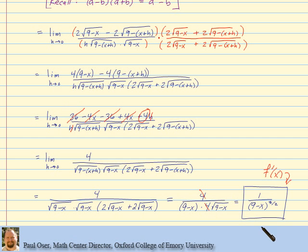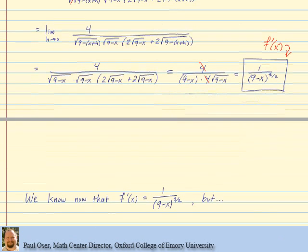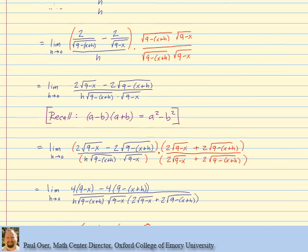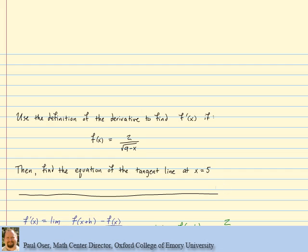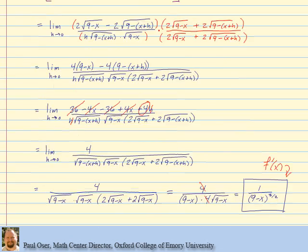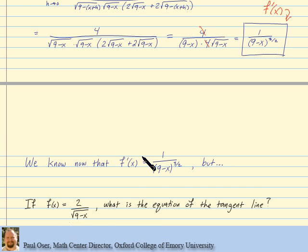So we know that the derivative is that. But there was more to our question. Not only did we have to find f prime of x using the definition of the derivative — we also had to find the equation of the tangent line at x equals 5. Going back, we still need to answer: if this is the function and we now know this is the derivative, what is the equation of the tangent line?